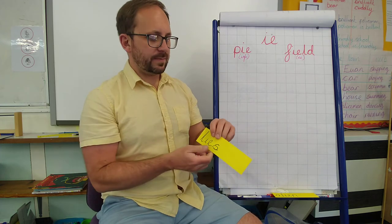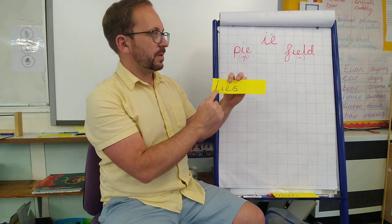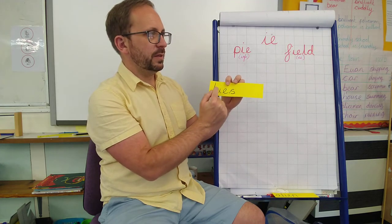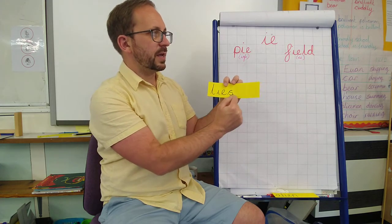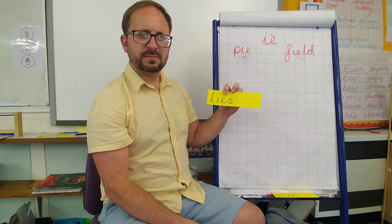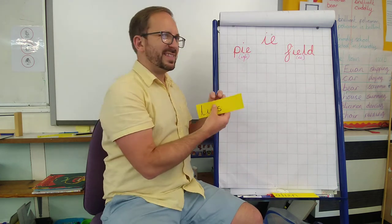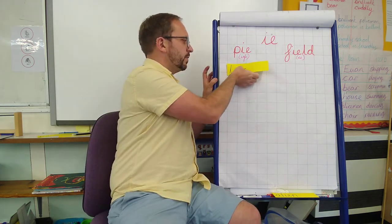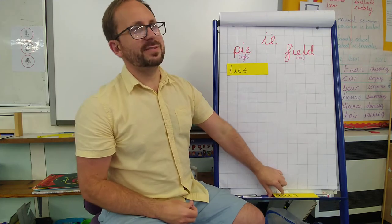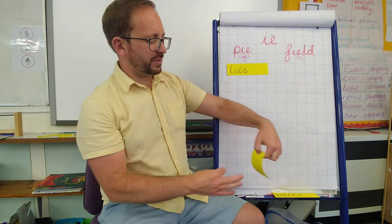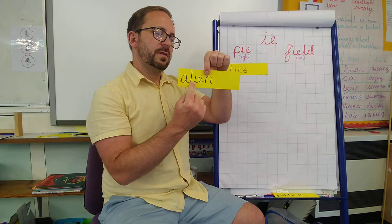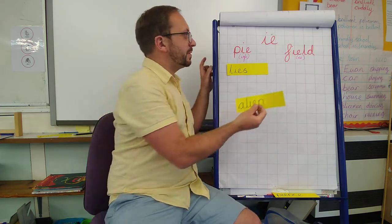Okay, first one. Let's have a look at this. Is this IE's 'lies' or is it IE's 'leaves'? You're right, it's 'lies.' Although, I'm not lying — it is in the right one. Okay, well, why did I write this down? You should know this one straight away. You're right — 'alien.' We just looked at that one.